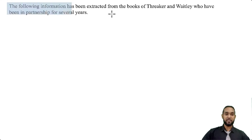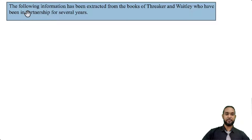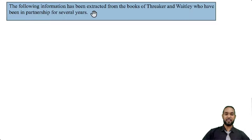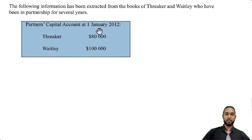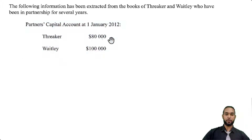So we have a partnership question and it reads that the following information has been extracted from the books of Threka and Waitly, who have been in partnership for several years. The first thing they give us is the partners' capital account balances at the 1st of January 2012: Threka has $80,000 and Waitly has $100,000.